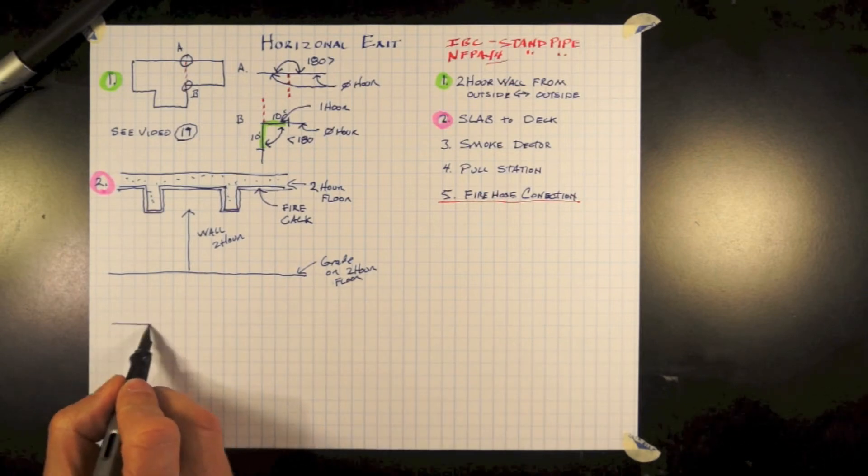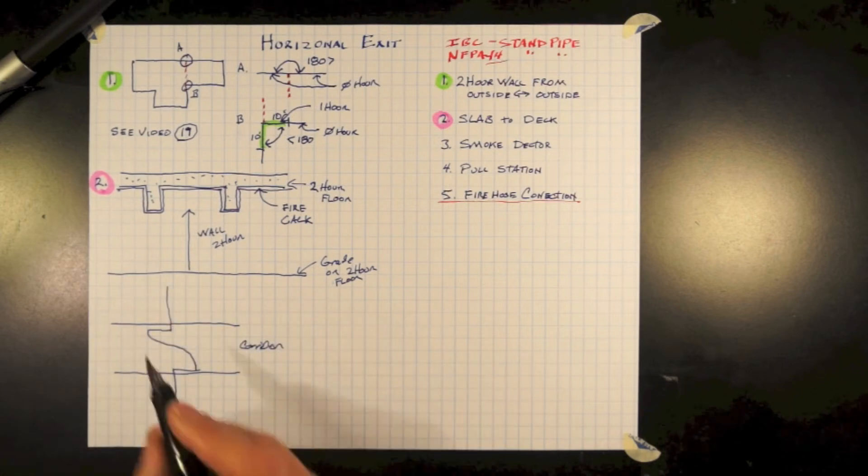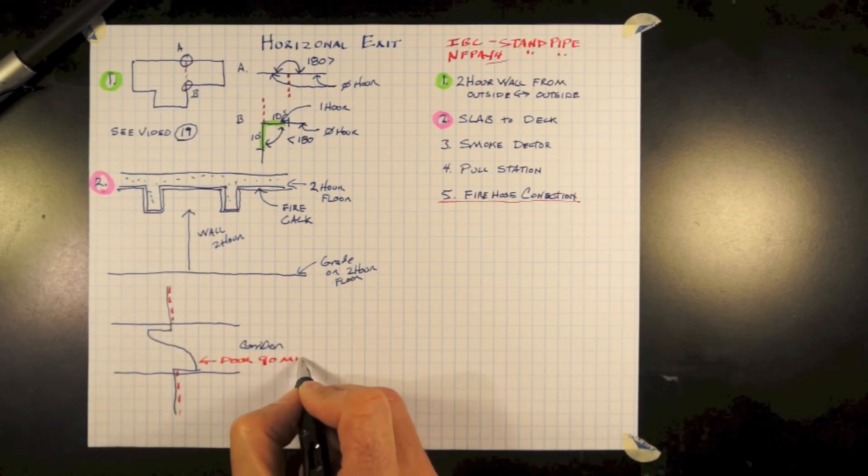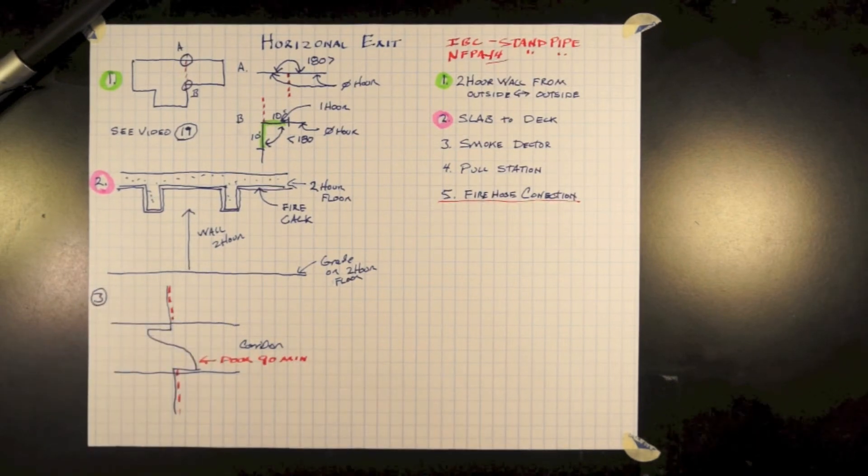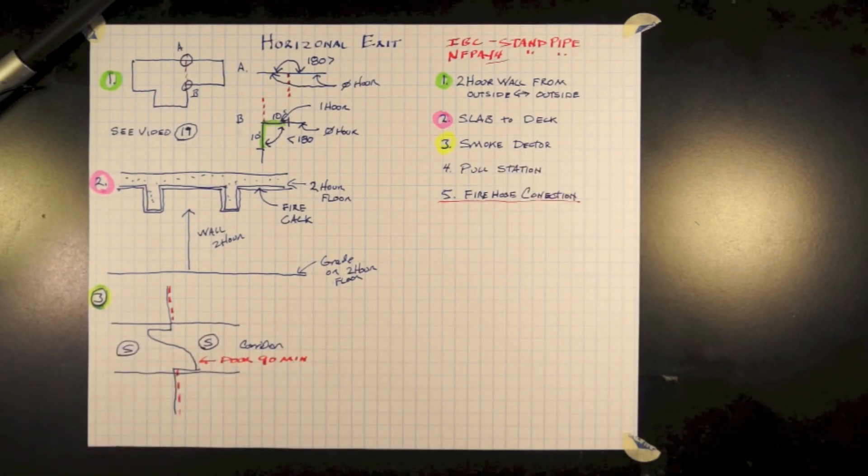So looking at number three here, we have a corridor crossing the horizontal exit wall, which is now our horizontal exit. In order to become a horizontal exit, we must provide a smoke detector on each side of the horizontal exit.